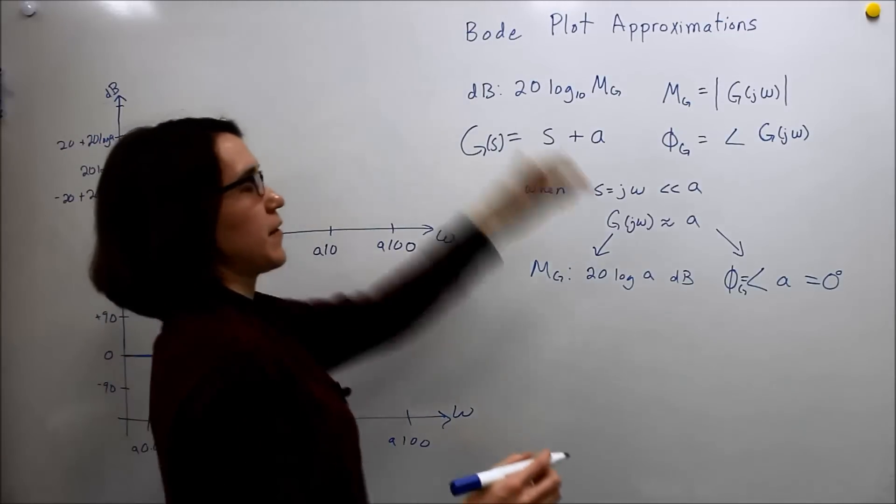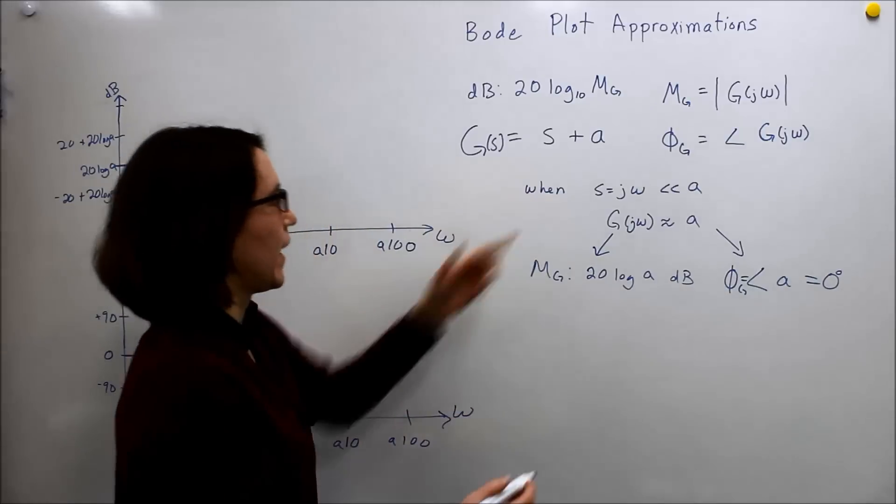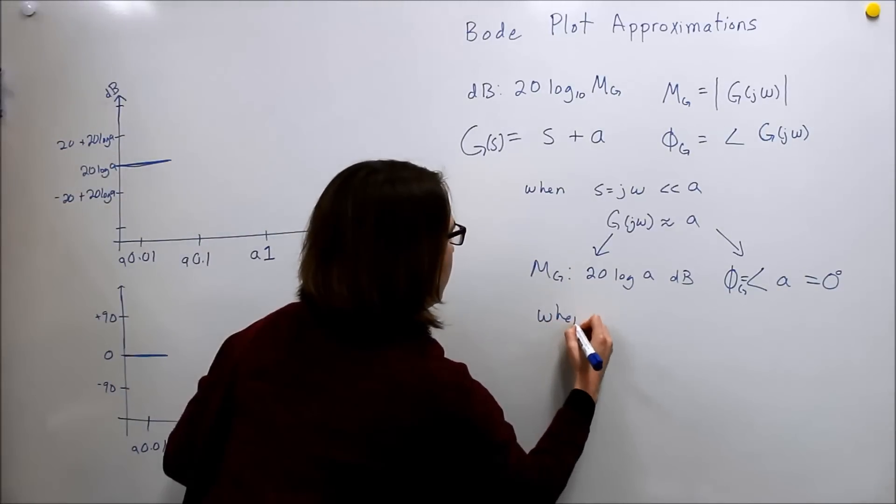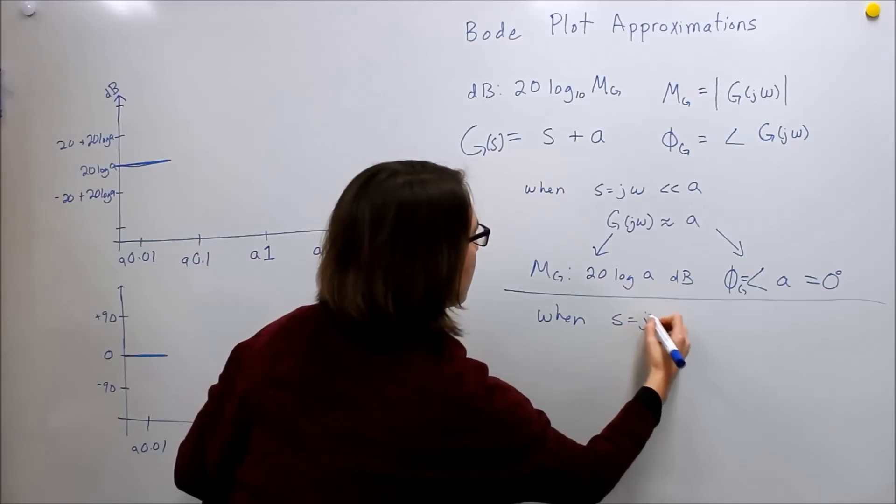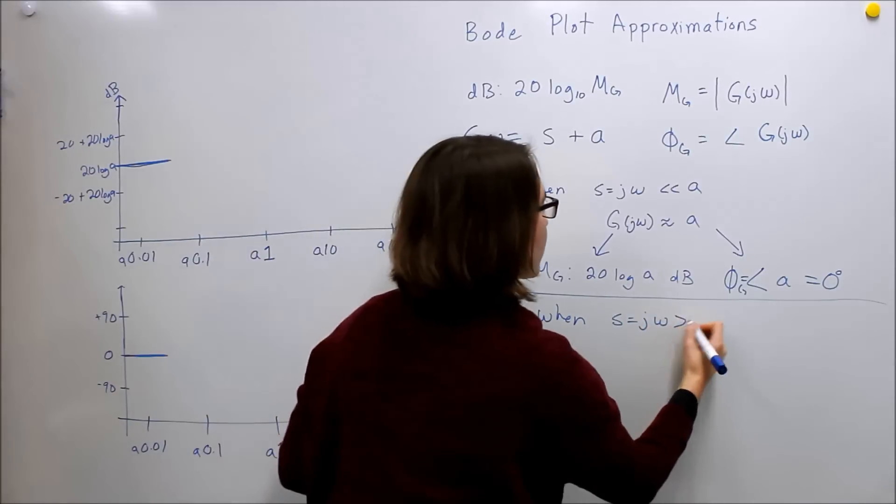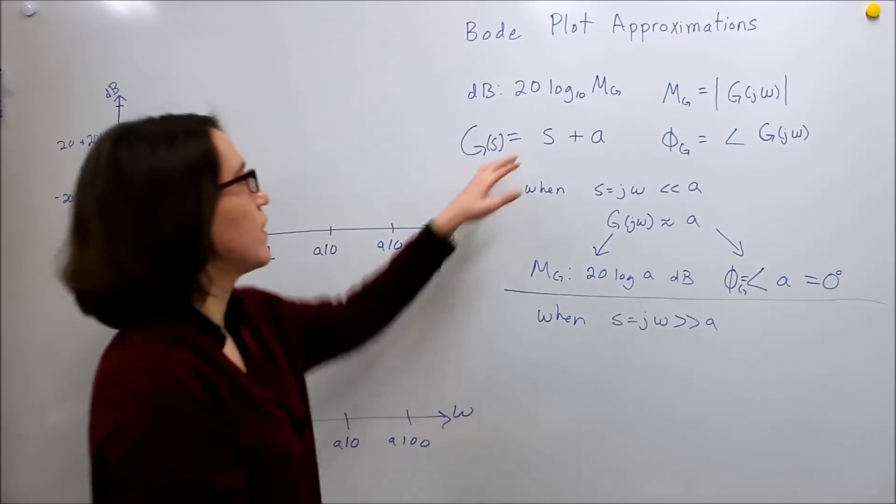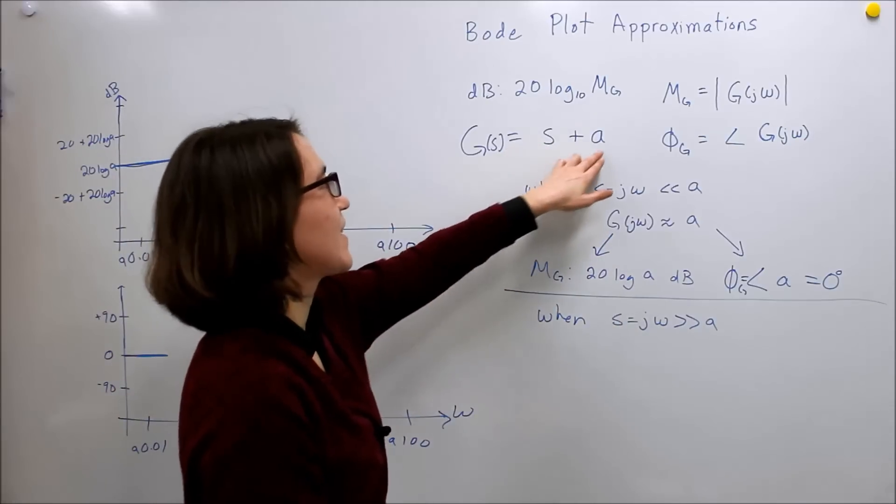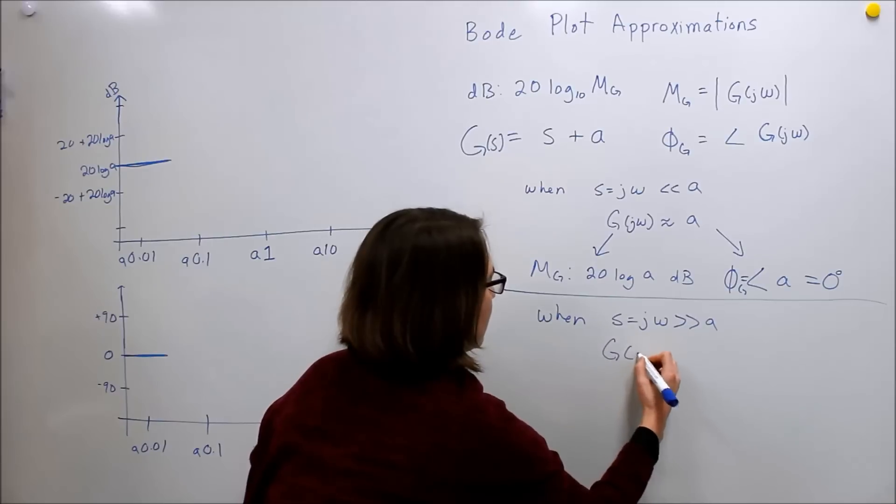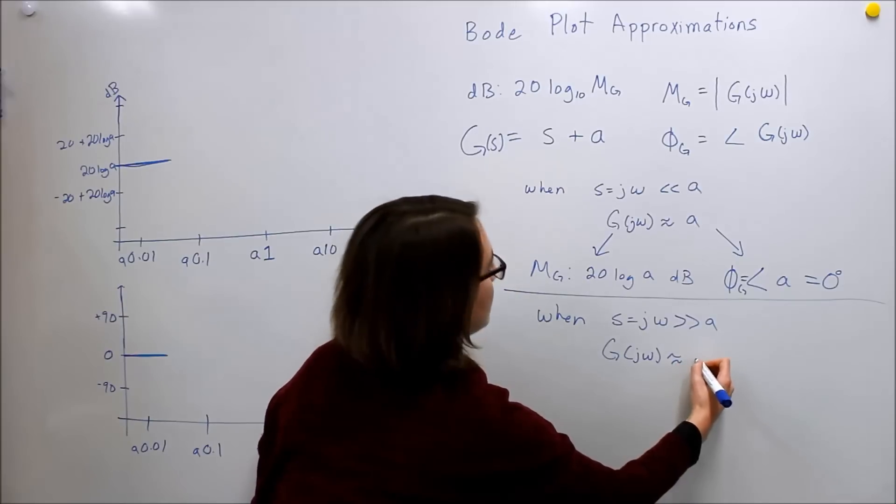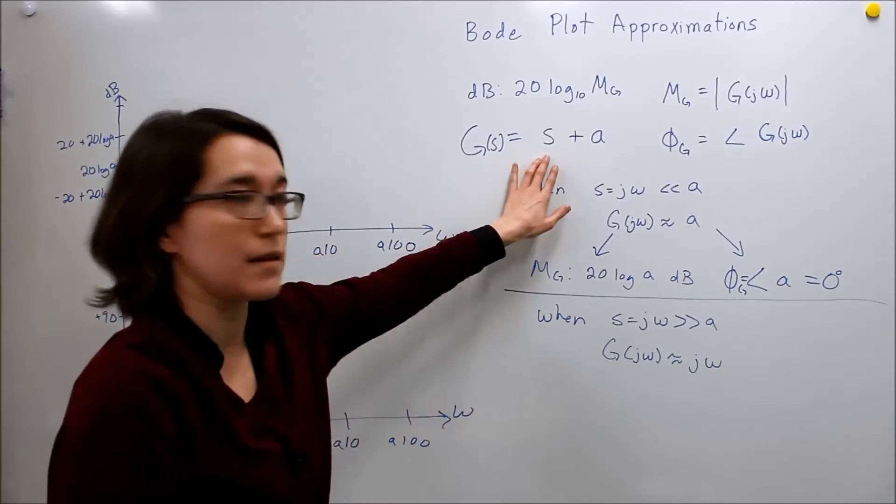So let's now jump over to the other side. Now let's say s equals j omega is much larger than a. So in this equation, if this is really large, this kind of doesn't matter anymore. So our g of j omega will be approximately just j omega, just the s here.